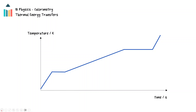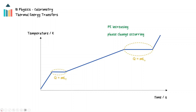When the substance is undergoing a phase change, the temperature remains constant and the gradient of the line is zero. Here, the energy being transferred into the particles is increasing the distance between the particles, increasing their potential energy. The relationship q equals mL applies here.